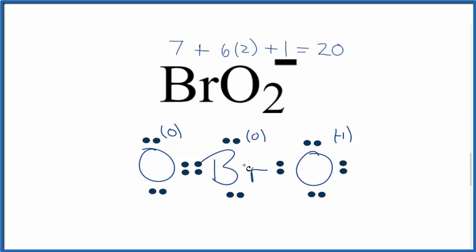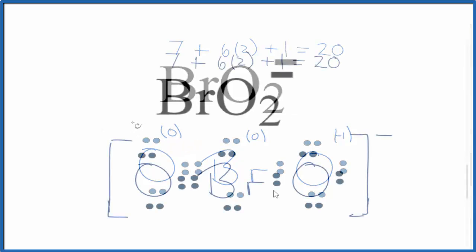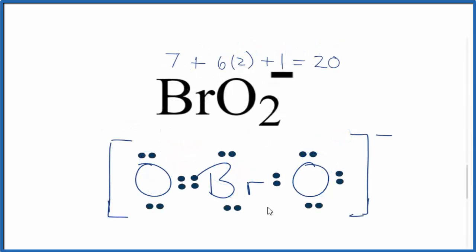We have a negative for the whole BrO2 ion. So because this is an ion, we should put brackets around it and then a negative sign. This is the Lewis structure for BrO2 minus — this is the most favorable or likely Lewis structure.